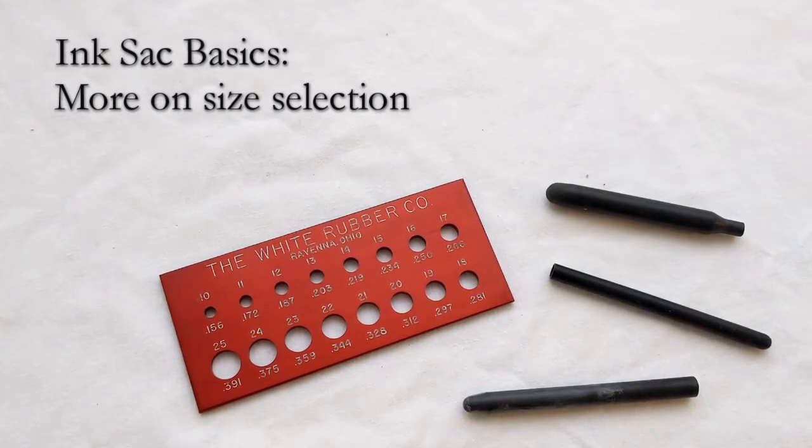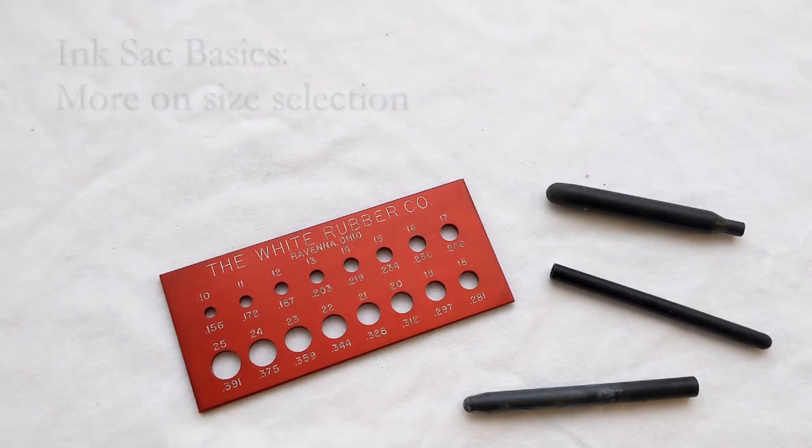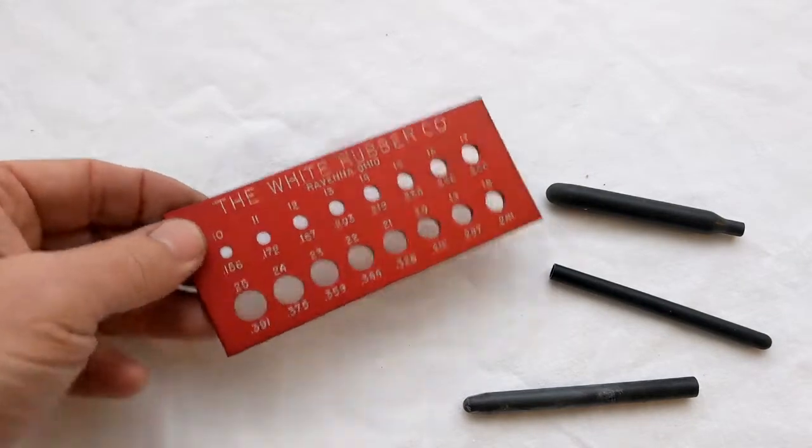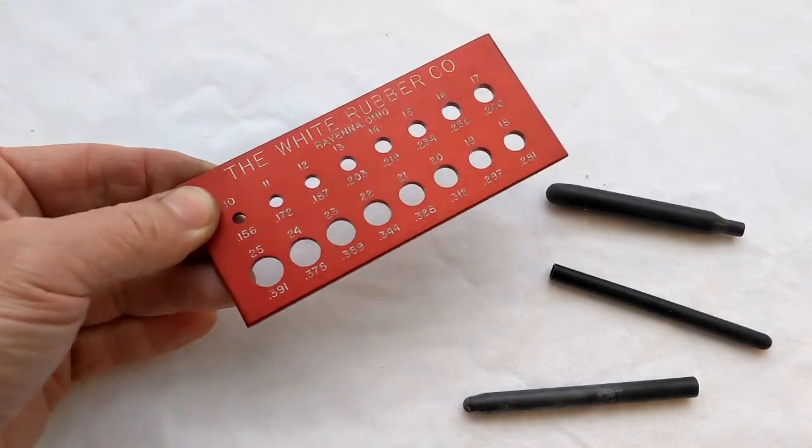An essential tool for measuring sac size is a sac gauge. This one shown here is a nice reproduction of a design that probably goes back to the 1930s, 1940s.